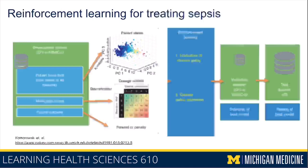In health care, we wouldn't be comfortable having an algorithm make changes to a patient's state by giving medications or making medical decisions to learn the best course of action. However, using data collected from routine care provided to patients, we can try to figure out the right thing to do for any given patient — potentially informing guidelines and counseling providers on the best course of action at a given point in time.